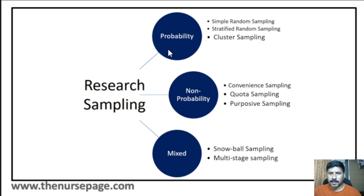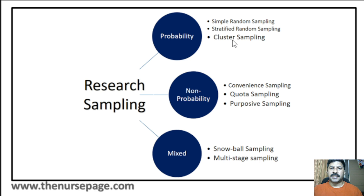The probability sampling is divided into mainly three important types: first one is simple random sampling, second one is stratified random sampling, third one is cluster sampling. These are examples of probability sampling. The second group is non-probability sampling, which is subdivided into convenience sampling, quota sampling, and purposive sampling.